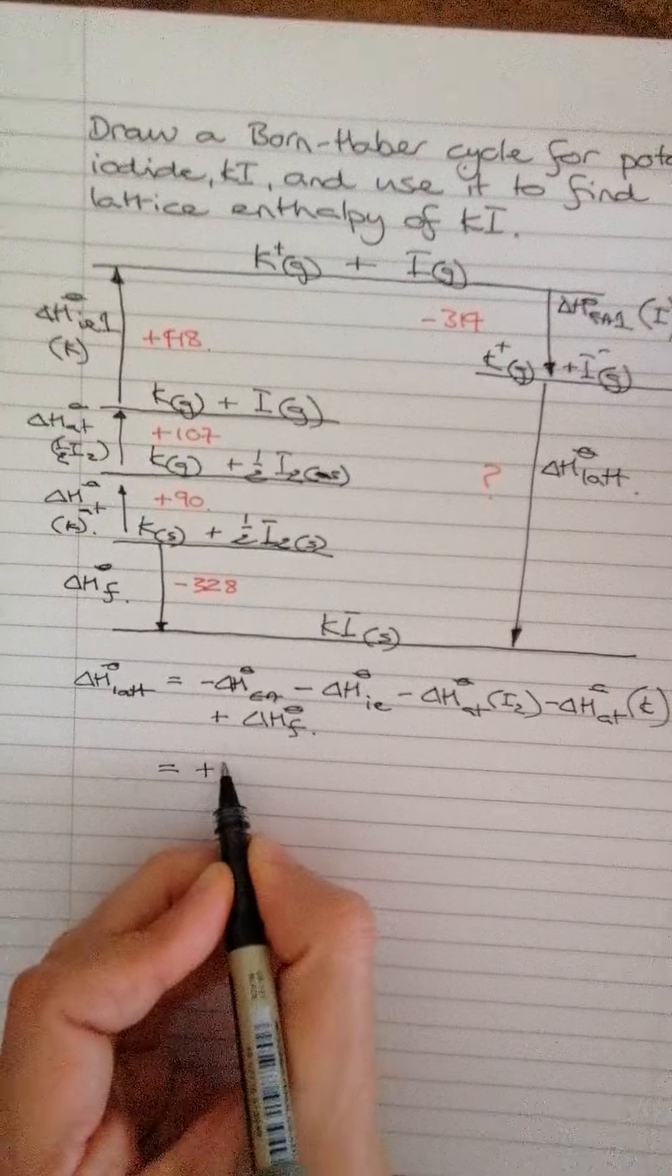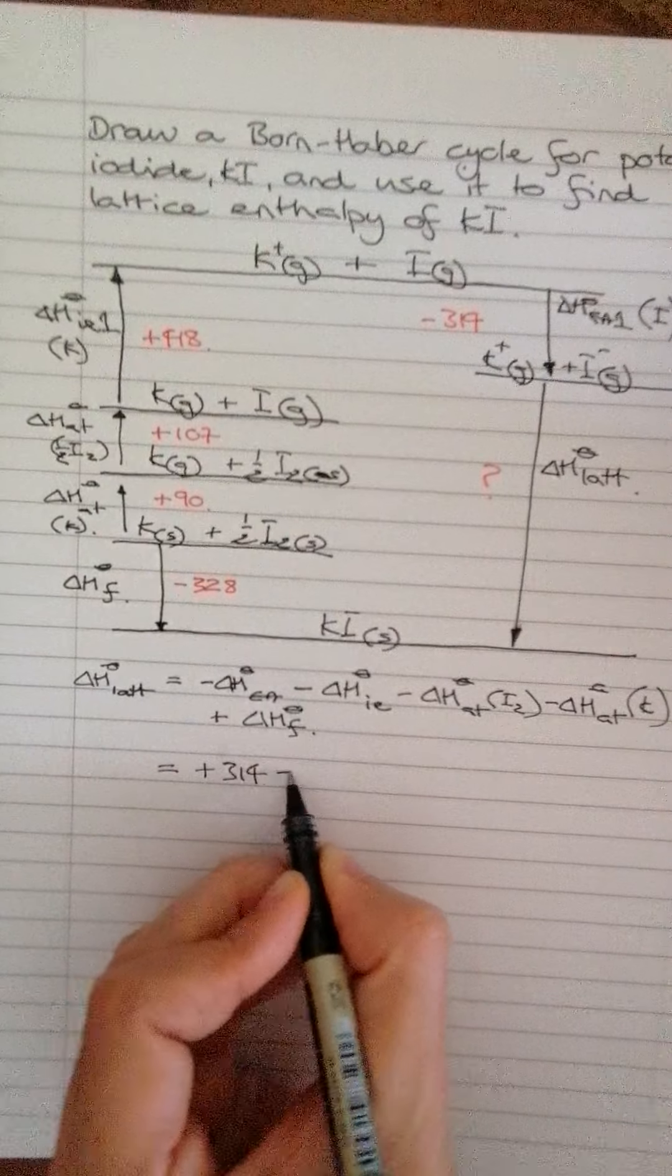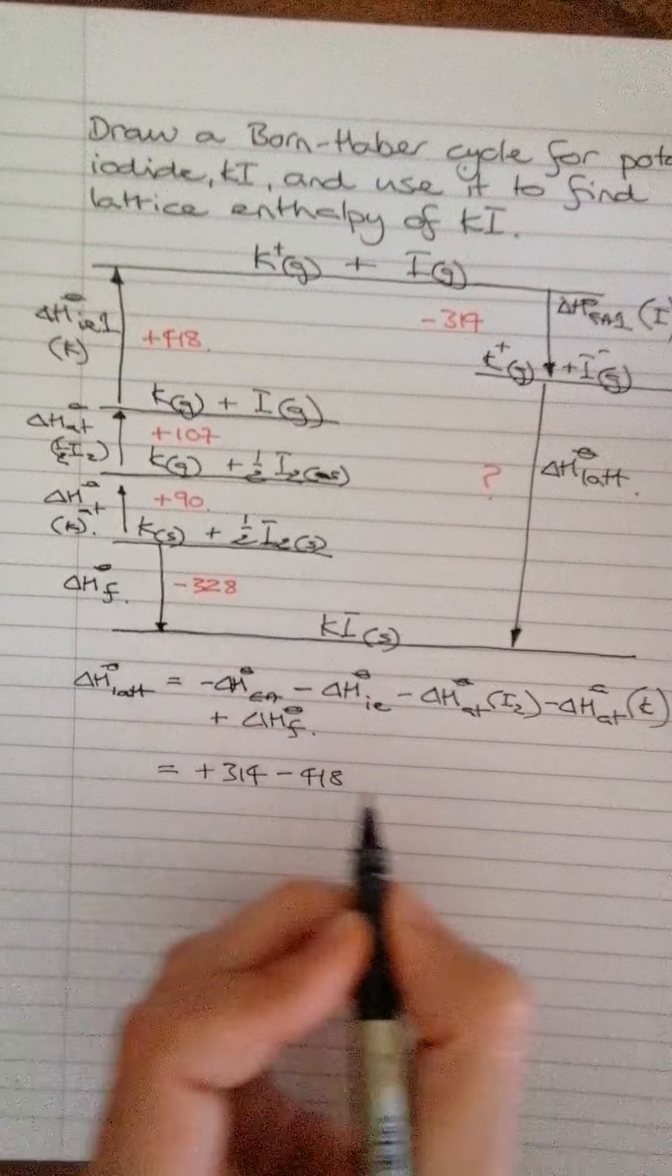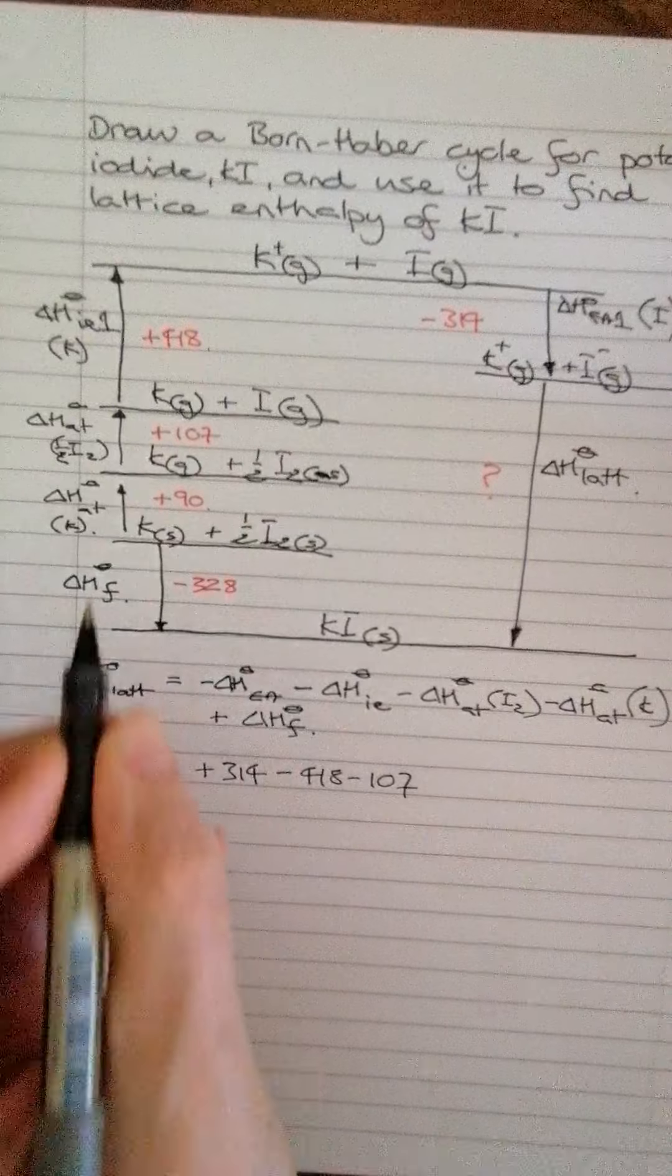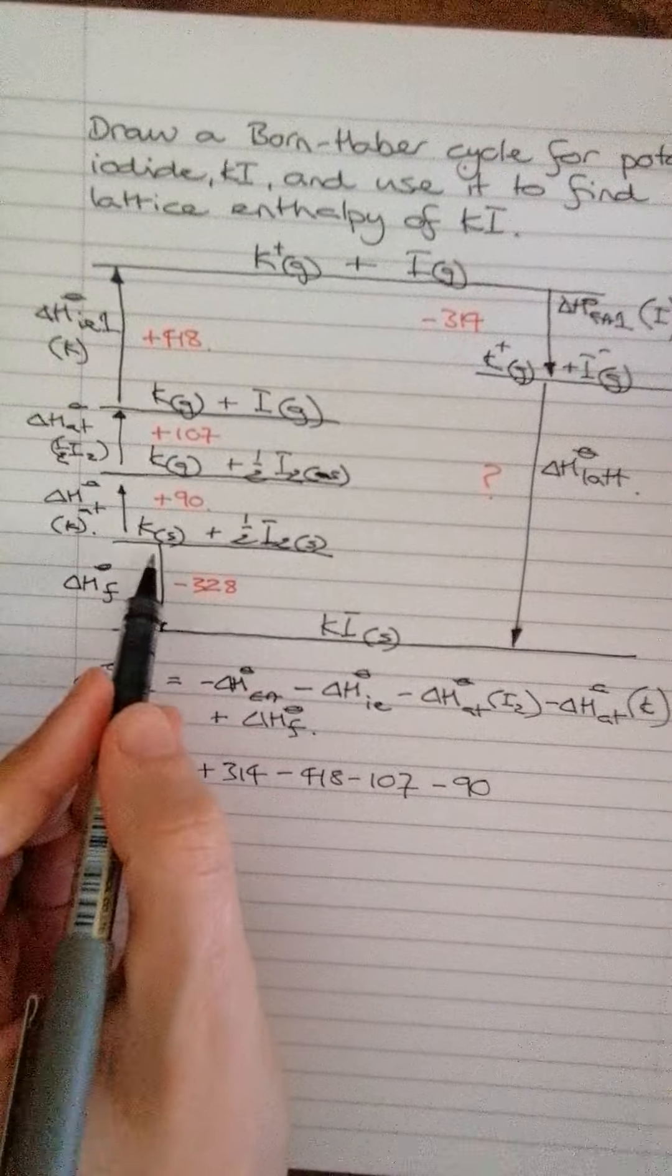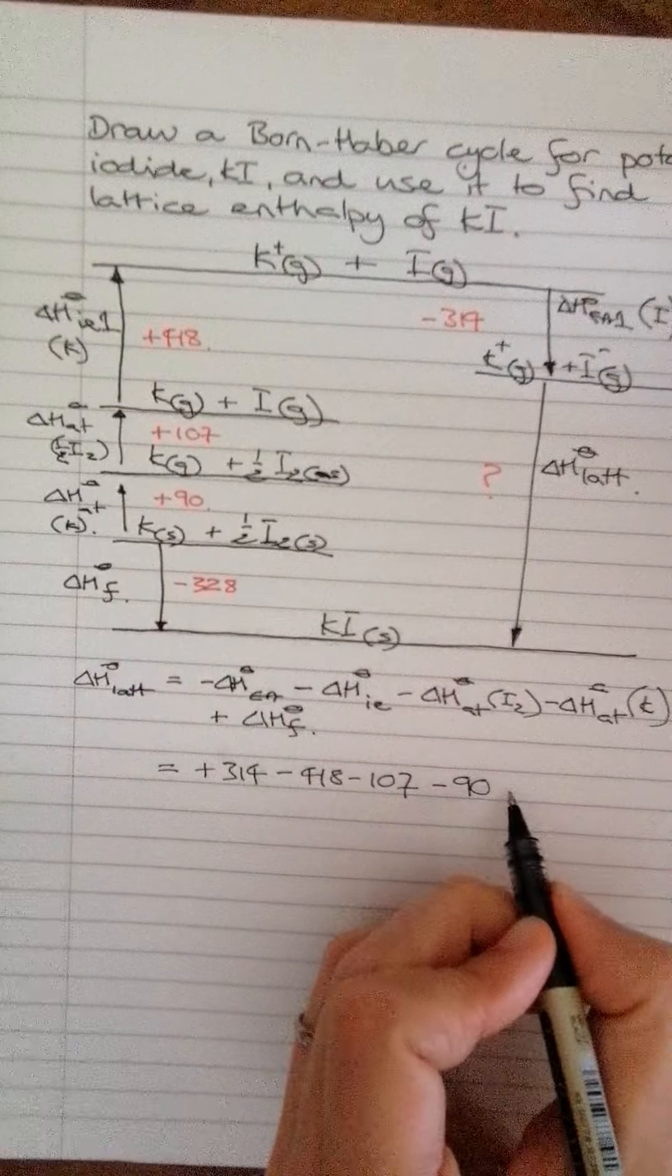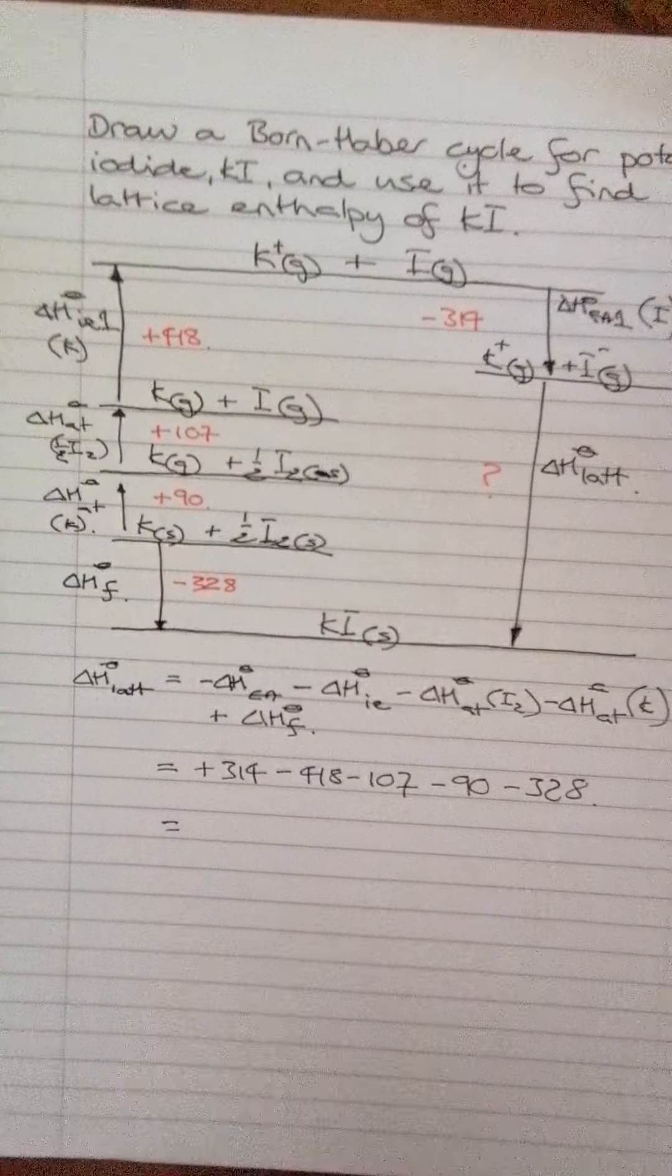Here we go. Plus 314, minus 418, minus 107, minus 90. Now we're going with the arrow, so we keep this one the same, so it's minus 328. Okay.